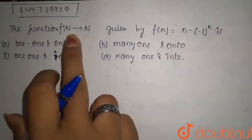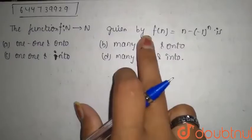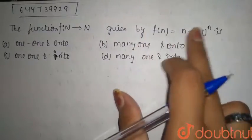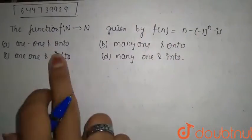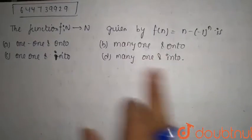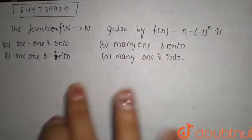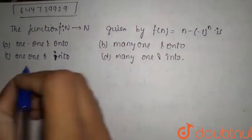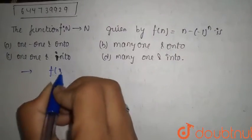The function f: N to N is given by f(n) equals (-1)^n times (n/2), approximately n minus one raised to the power n. We have to check what the correct option is. First of all, for the one-one condition, we have to check: when f(x1) equals f(x2), does it imply x1 equals x2?